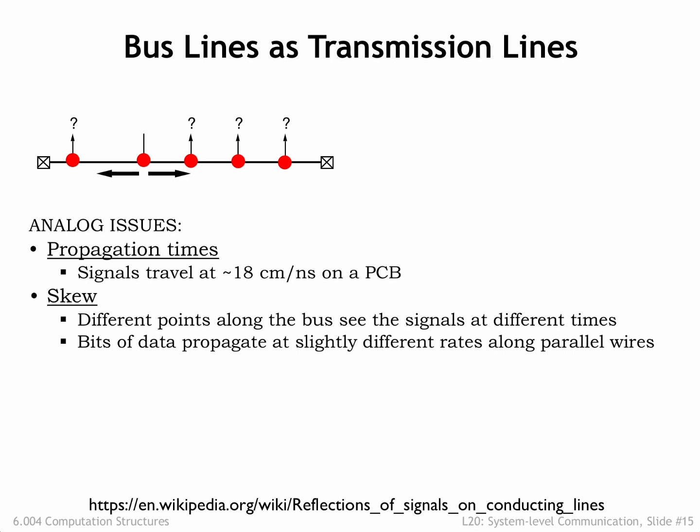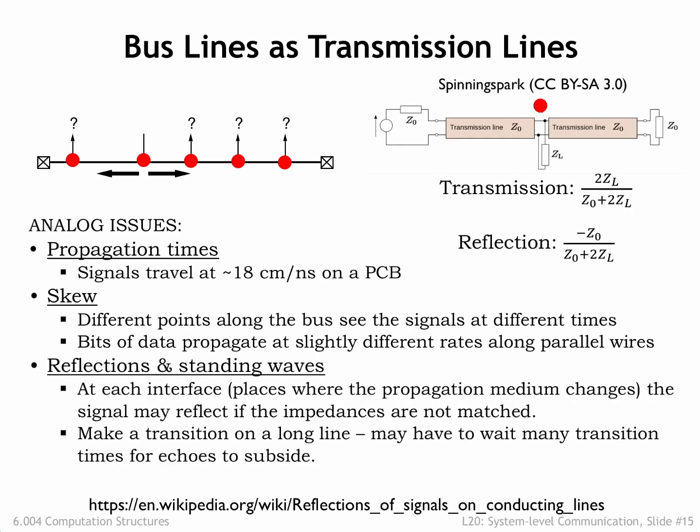Another problem was that the clock signal would arrive at different cards at different times. A card with an early-arriving clock signal might decide it was its turn to start driving the bus signals, while a card with a late-arriving clock might still be driving the bus from the previous cycle. These momentary conflicts between drivers could add huge amounts of electrical noise to the system. Another big issue is that energy would reflect off all the small impedance discontinuities caused by the bus connectors — if there were many connectors, there would be many small echoes which could corrupt the signals seen by various receivers.